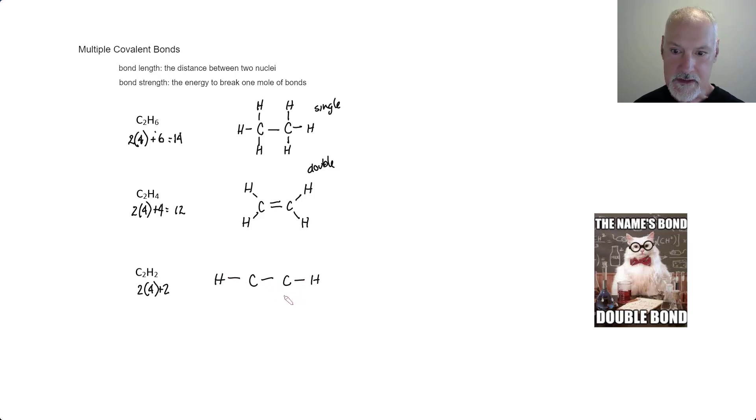And so I've used up six electrons here of the 10 that I have. And the carbons are going to need significantly more. So that'll put all 10 electrons in place. And I have an example here of a triple covalent bond.